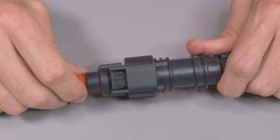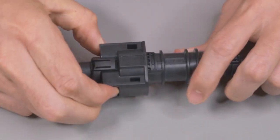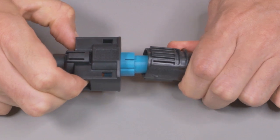To unmate DTSK connectors, depress the locking latches on the outside of the plug while pulling the plug and receptacle apart.